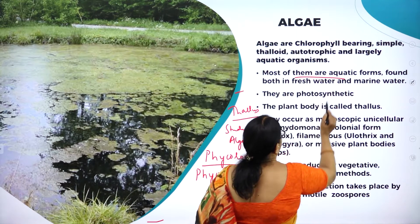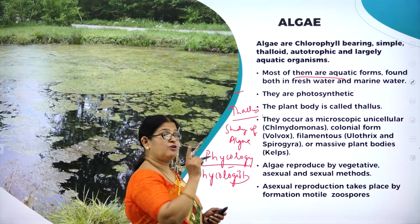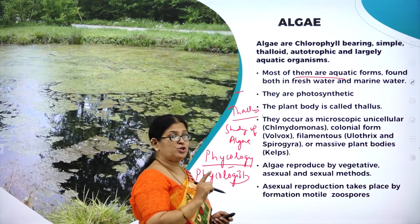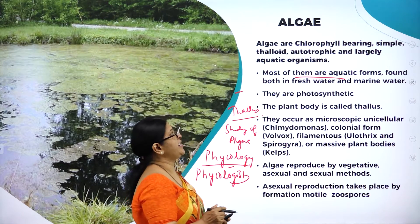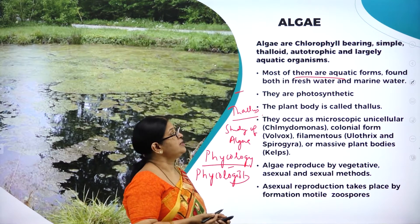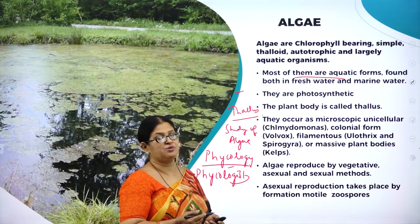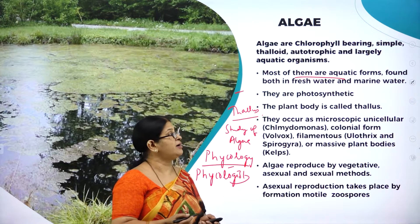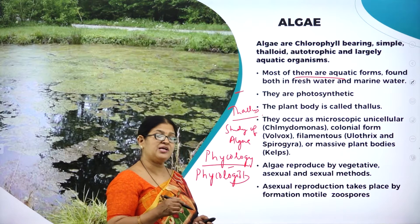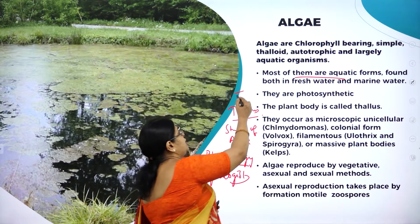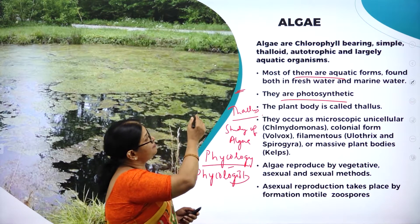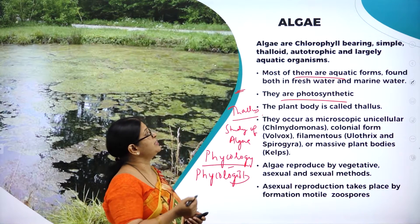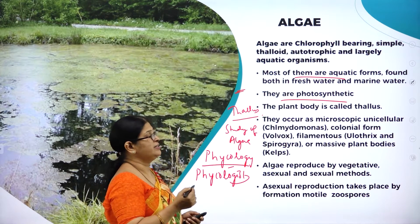Most algae are aquatic forms found both in fresh water and marine water — may it be a pond, lake, river, or sea. They are photosynthetic because they are chlorophyll-bearing, meaning they have chlorophyll. The plant body is called thallus — an undifferentiated mass of cells. Unlike angiosperms where we differentiate a plant into root, stem, leaf, flower, etc., in algae you cannot differentiate the plant body.